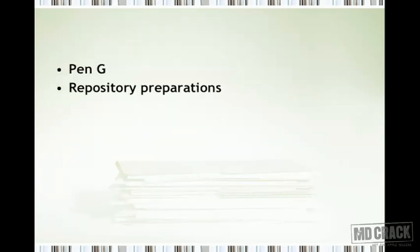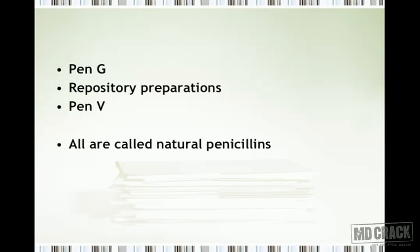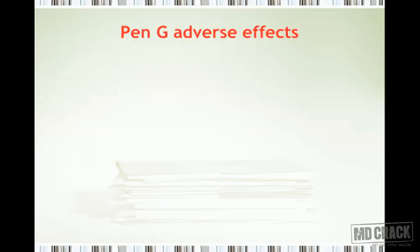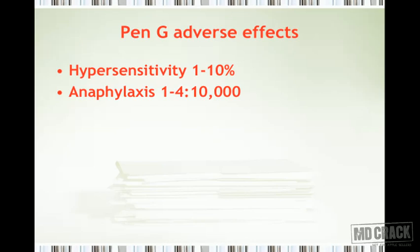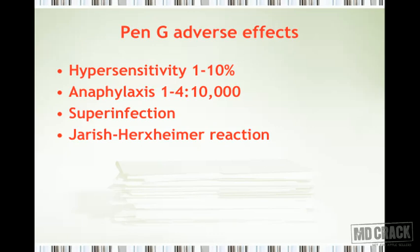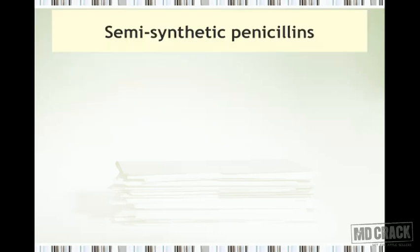Penicillin G, repository preparations of penicillin, and penicillin V are essentially the same — either penicillin G, the long-acting penicillin G, or the oral preparation called penicillin V. All of them can be considered natural penicillins. Penicillin G produces the following adverse effects: hypersensitivity reaction with an incidence of 1 to 10%, anaphylaxis in 1 to 4 patients per ten thousand, superinfection, and the Jarisch-Herxheimer reaction.